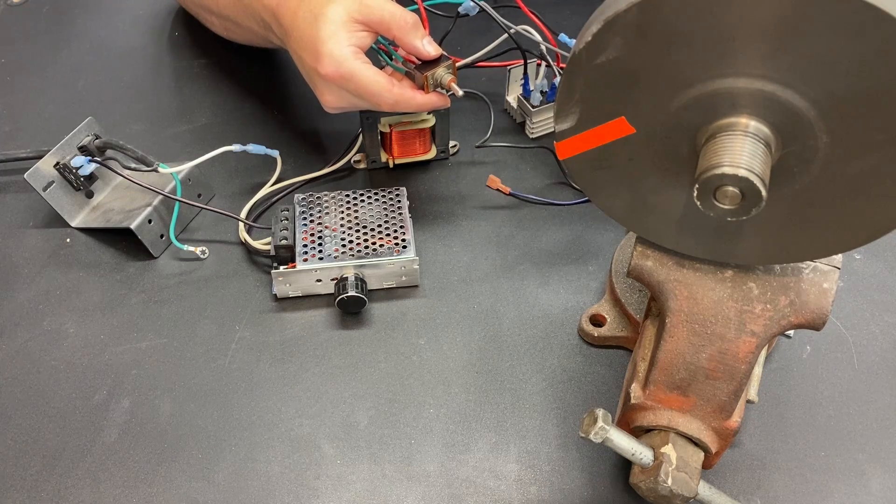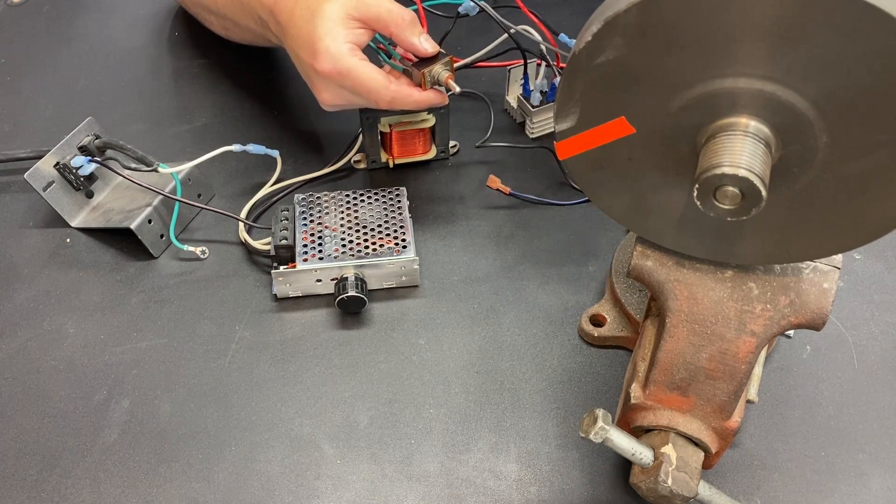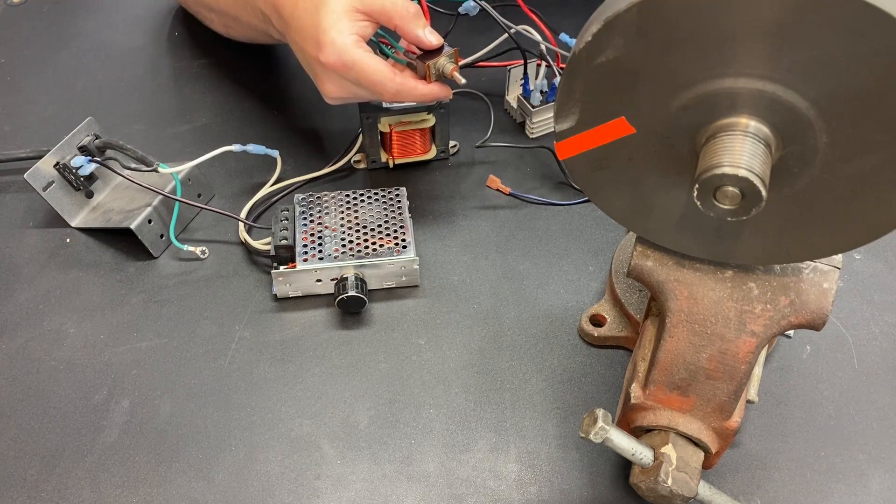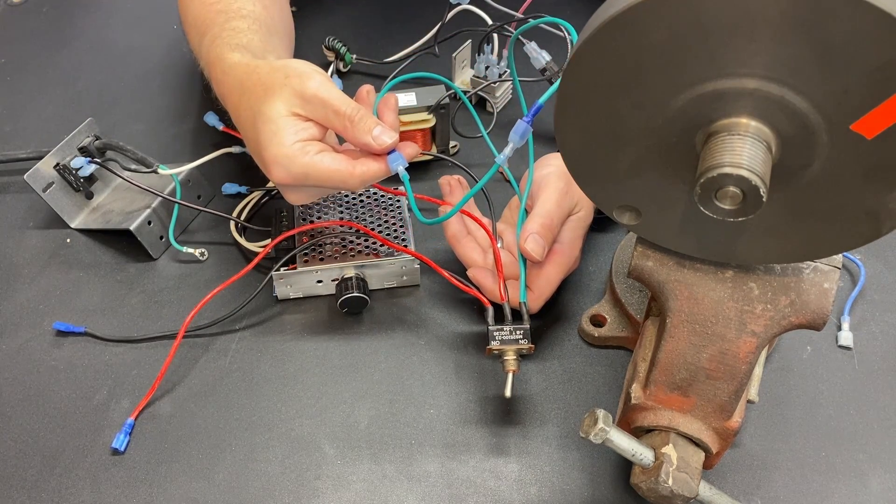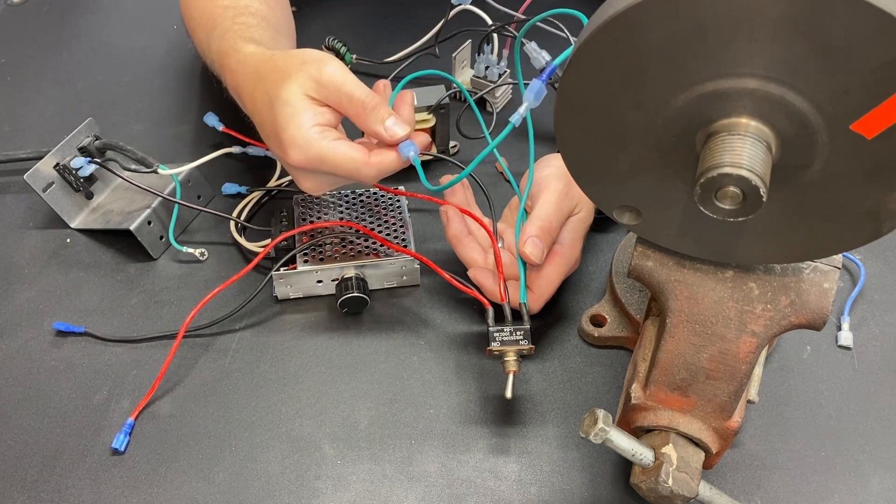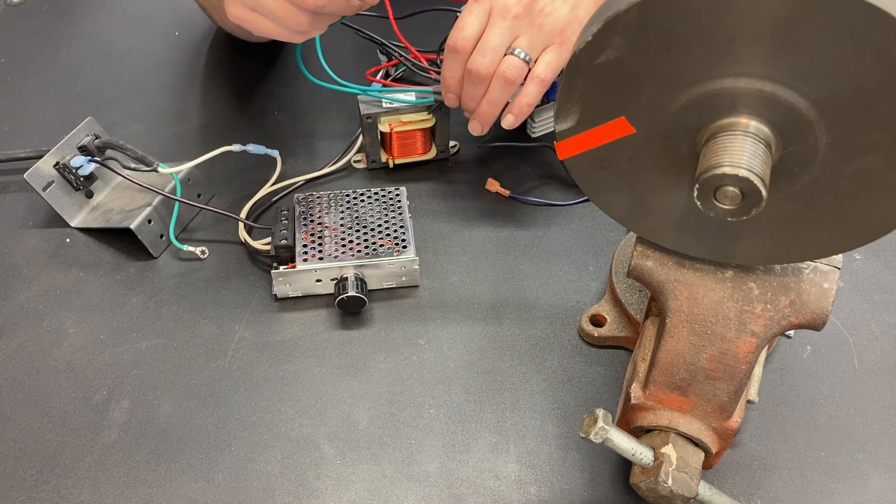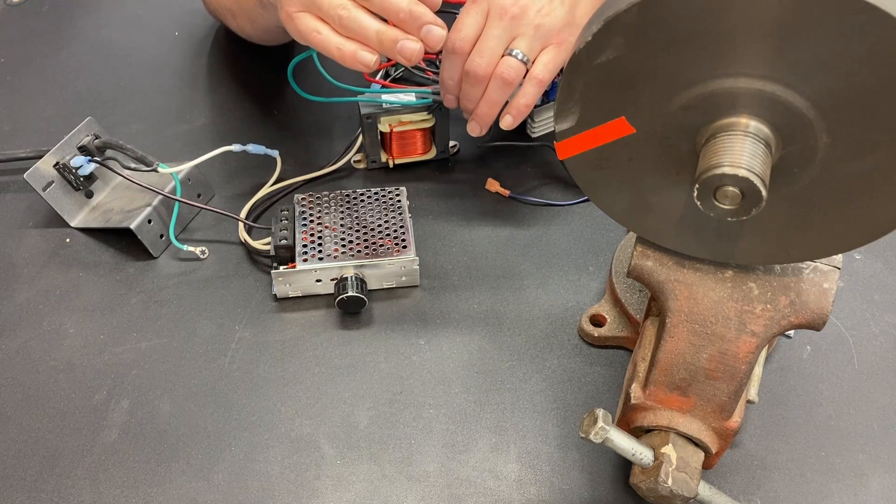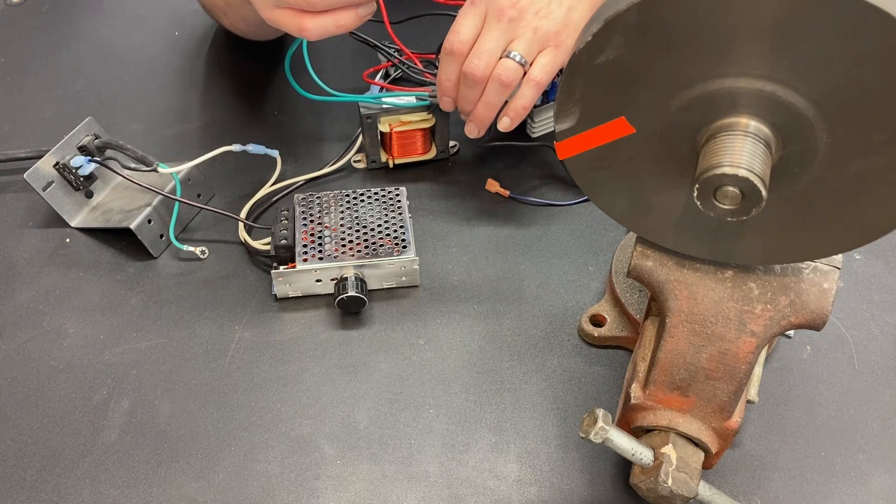Now if only there was a way that we could accomplish the same thing, reduce the wear and tear on the motor and still get it to stop. But wait, there is. Instead of doing a direct short like I have here, if we attach this to a very large resistor, that will slightly limit the flow of electricity and will accomplish the same thing, create the braking action, but reduce the wear and tear on the brushes inside the motor.